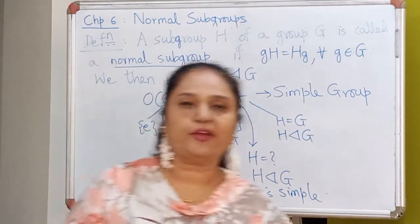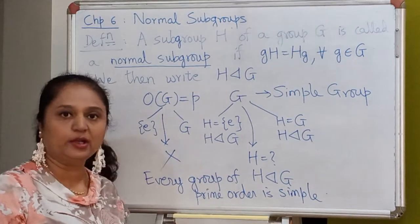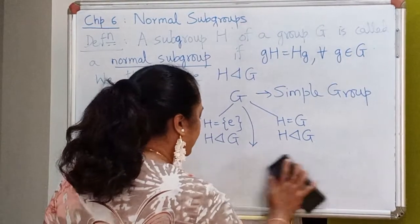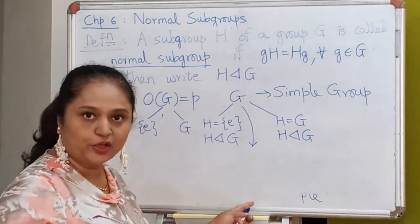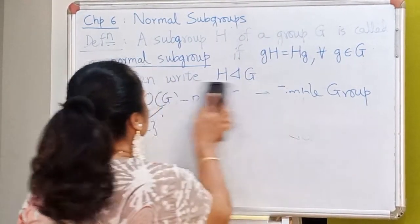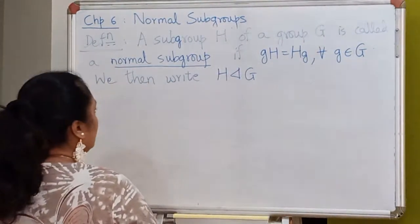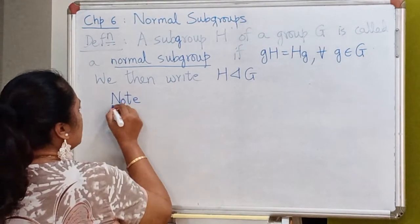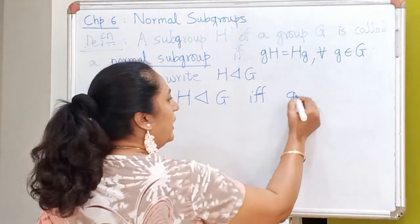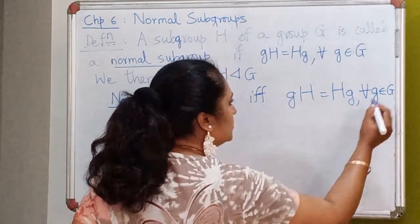It would be interesting to find an example of a group which is not of prime order — it should be of composite order — yet is still simple. After the lecture, you can look for such an example. Meanwhile, let's come back to the definition: H is a normal subgroup of G if and only if every left coset gH equals the corresponding right coset Hg.